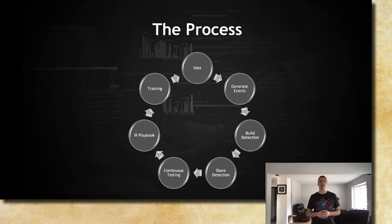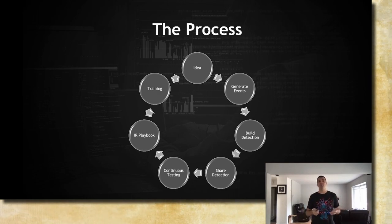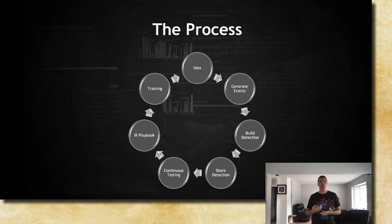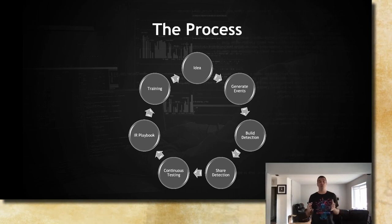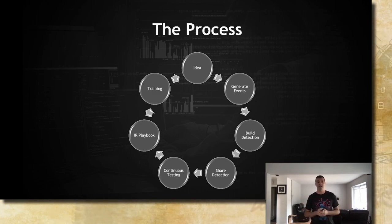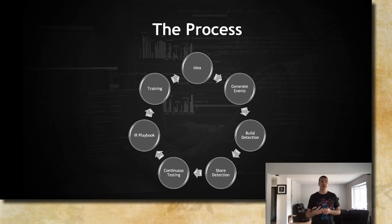Now let's jump into the subject because we have a lot of things to cover today. Here is the process we're going to go through — what I call the full circle detection. It starts with the idea of what you want to detect. After that, you generate those events and build your detection. You share your detection with the community, do continuous testing, build incident response playbooks, and finally train your analyst.